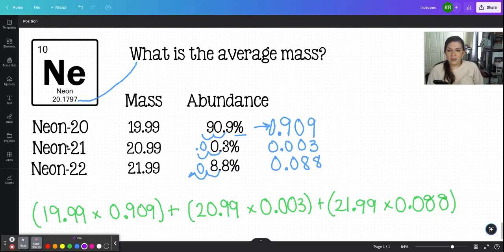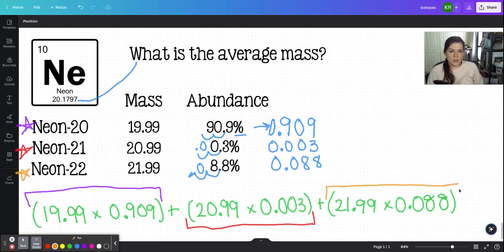That's how it's done. You take the data. Let's just color code this. We have neon 20. This here represents neon 20. Then we have neon 21, which would be represented by this chunk right here. And then neon 22 would be represented by this chunk right here.